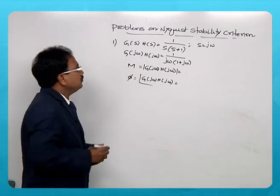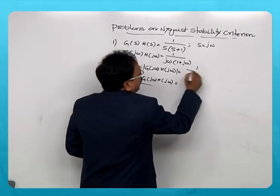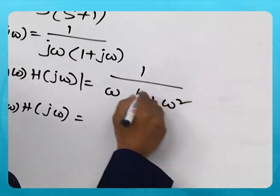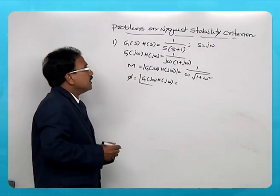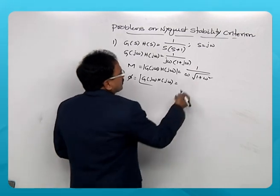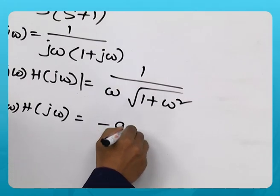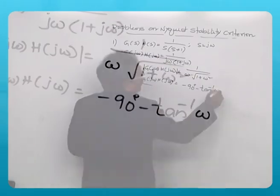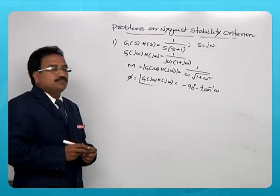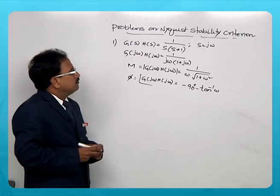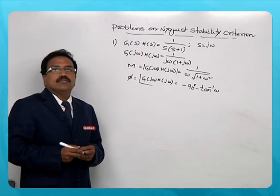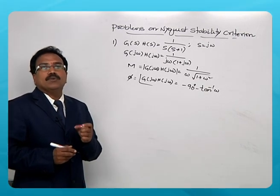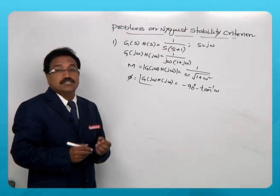The magnitude term is 1 / [ω · √(1 + ω²)]. In the phase angle function, as there is a pole at the origin, it becomes −90° − tan⁻¹(ω) for the second term. It is very easy to draw the polar plot because the polar plot is part of the Nyquist plot.